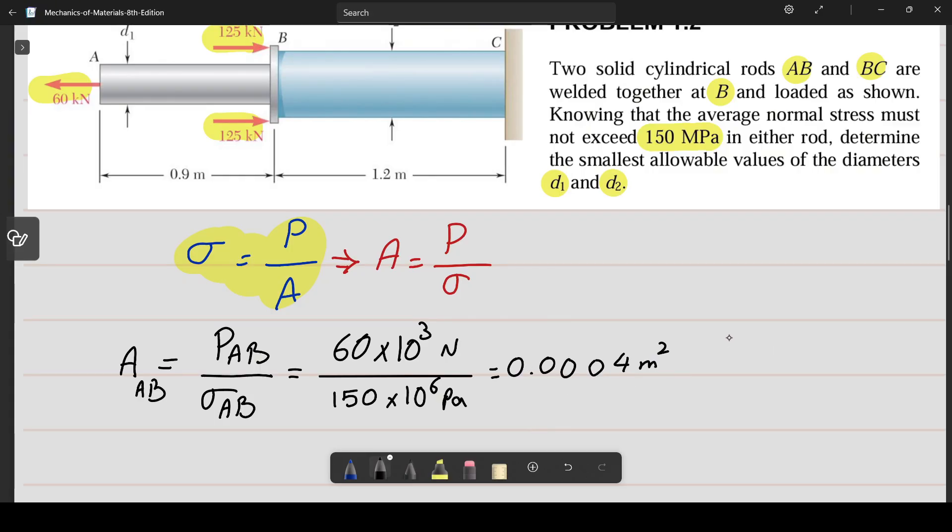On the other hand, we also know that the cross section area, since it's a circle, is equal to AAB equals π over 4 times the diameter squared. We already calculated the area as 0.0004 square meters, so now we move all terms to one side to isolate the diameter.